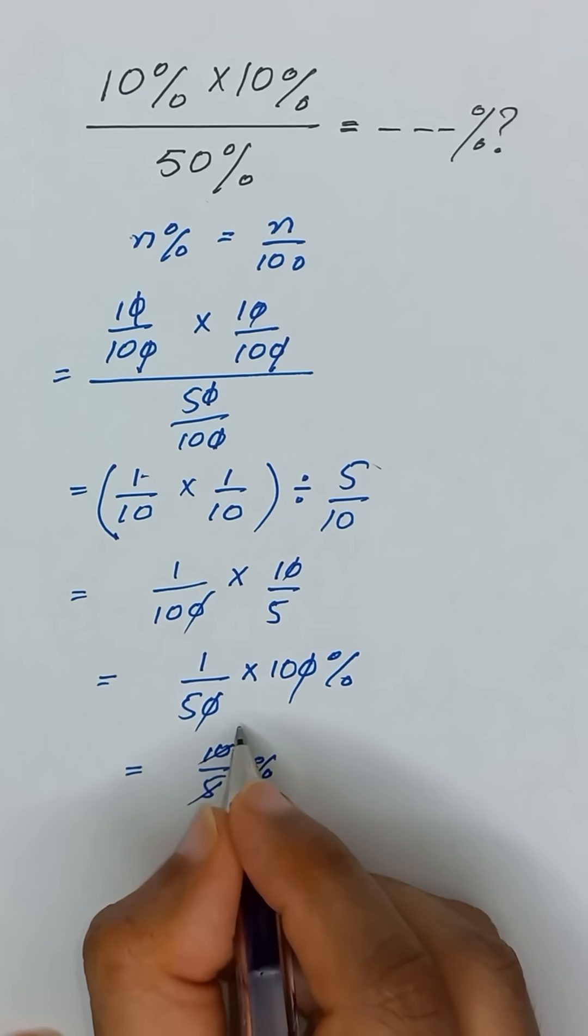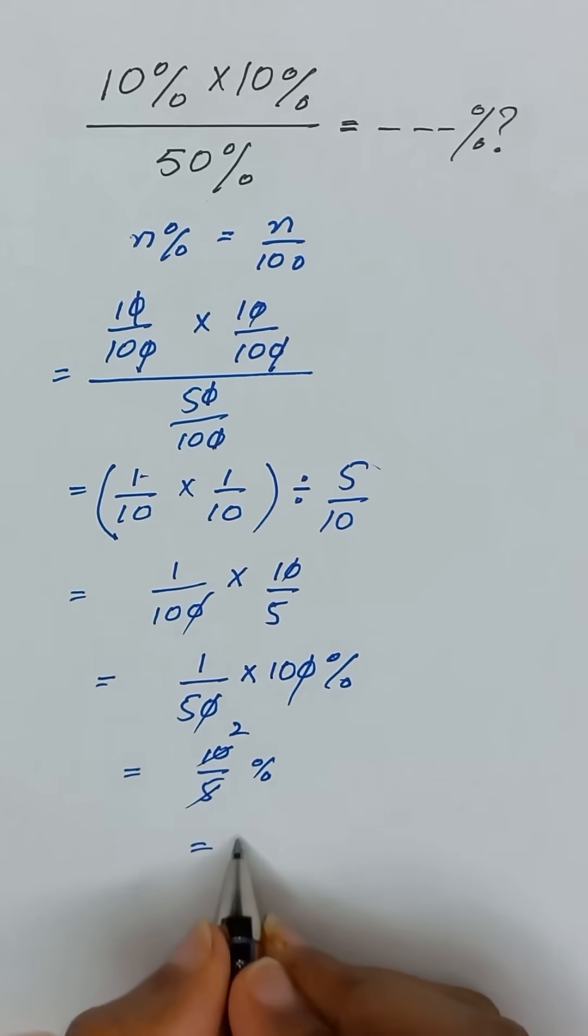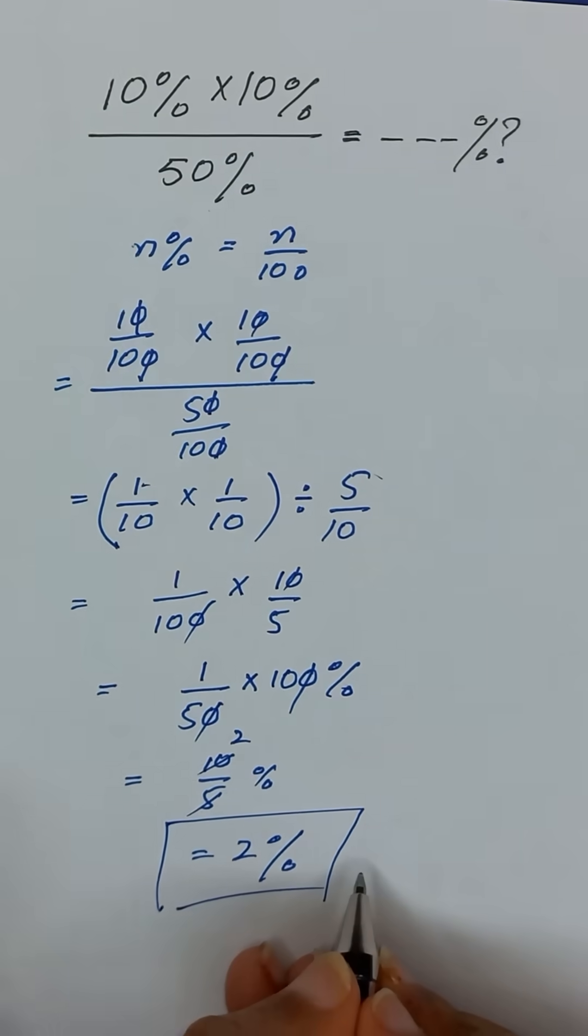5 times 1 is 5, 5 times 2 is 10. So it will be equal to 2%. Thanks for watching.